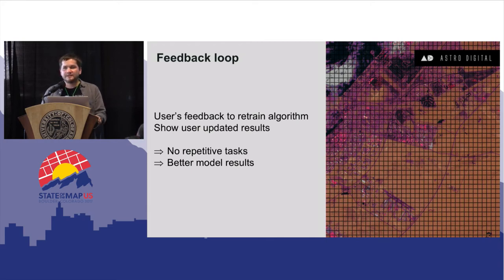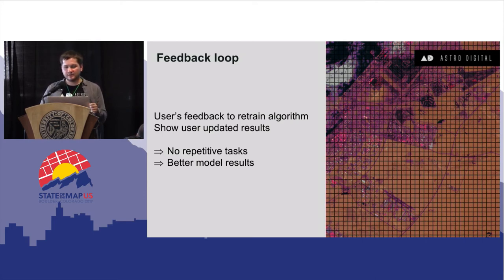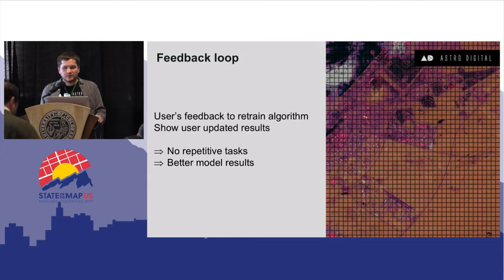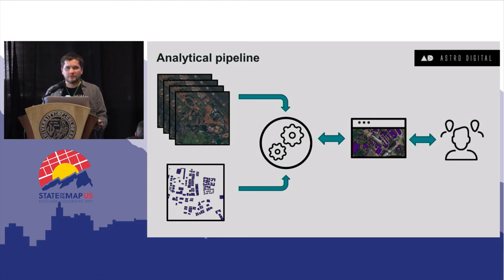Here's an example of how we did it with Dubai. We created a grid over Dubai and overlaid it with OSM data, asking users to only check cells in the grid where OSM data is complete. By validating just 10 to 15 tiles out of the grid, we were able to produce a mask, and as a next step the user could validate tiles where the mask worked well. This feedback loop is enabled by our analytical pipeline, where we use satellite imagery and labeled but incomplete data to train the model, and then retrain it by validating results with users.